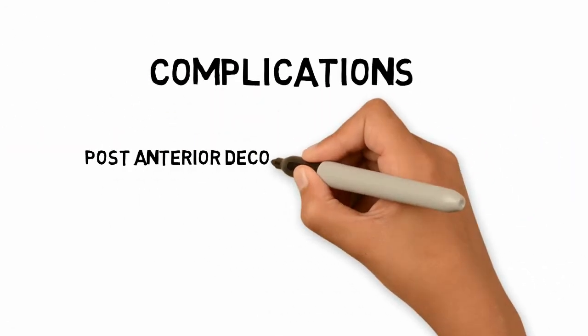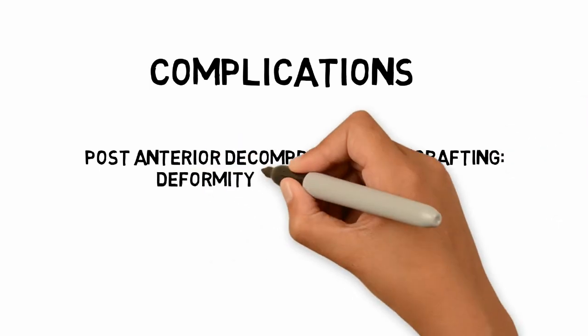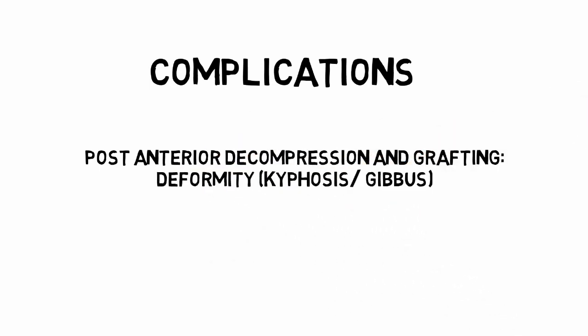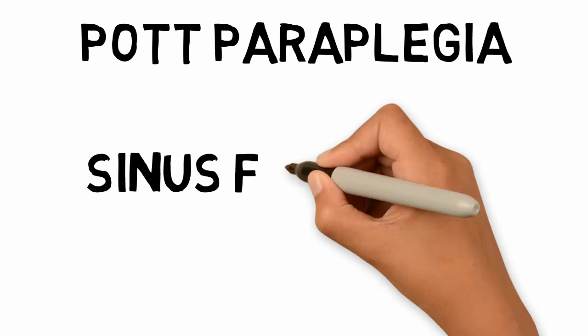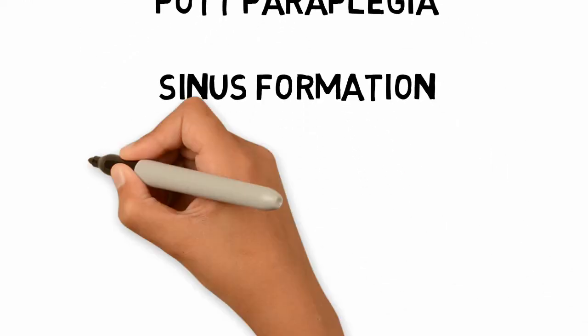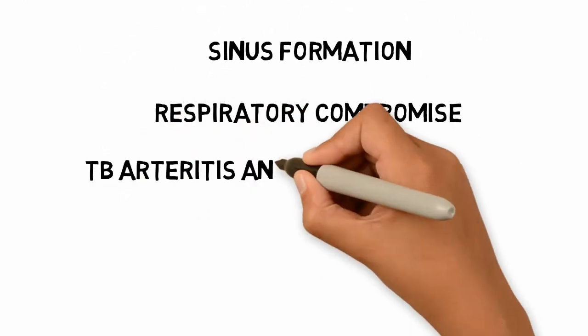Complications of TB Spine include deformities such as kyphosis and gibbous after anterior compression and grafting, Pott's paraplegia, sinus formation, respiratory compromise, and TB arteritis and pseudoaneurysm.